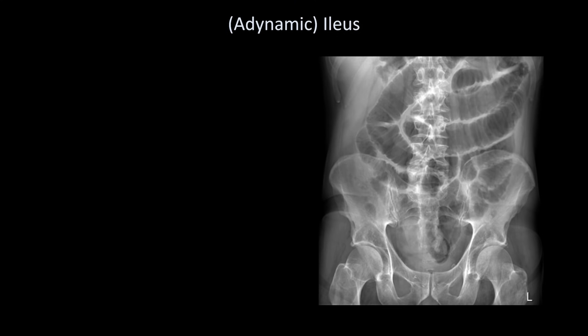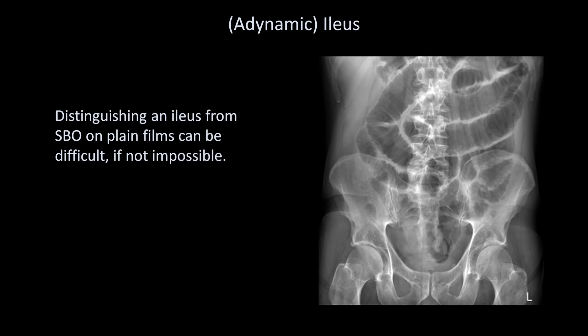Here's a supine film in a patient with something called an ileus, which in common usage is used synonymously with adynamic ileus, in which there is an absence of normal peristalsis leading to bowel distension. Distinguishing an ileus from a mechanical SBO on plain films can be difficult, if not impossible. Often the clinical context is necessary to distinguish them, in that a mechanical SBO is usually the reason a patient presents to the hospital, whereas an ileus usually develops after the patient has already been admitted for something else.